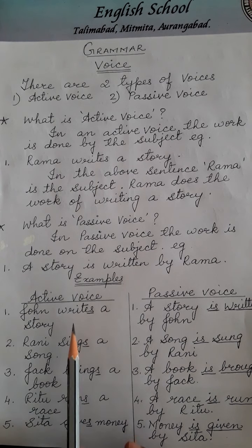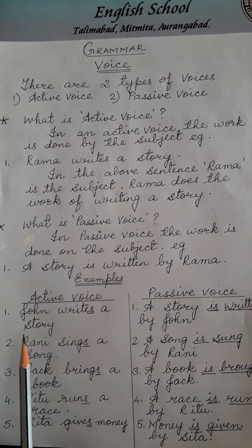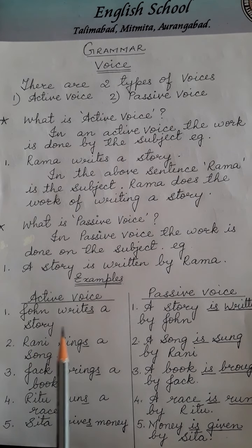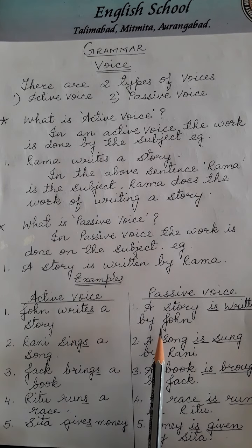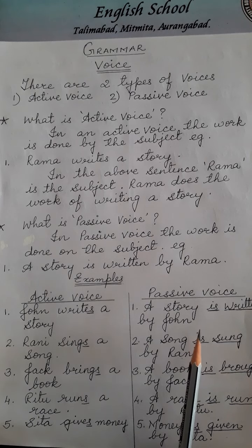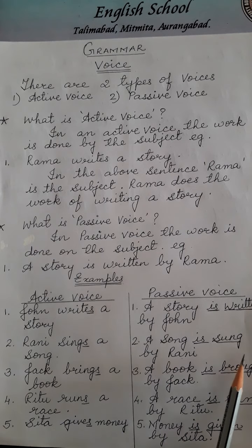You are going to make two columns — Active voice and Passive voice. First: John writes a story (active voice) → A story is written by John (passive voice). Second: Rani sings a song → A song is sung by Rani.